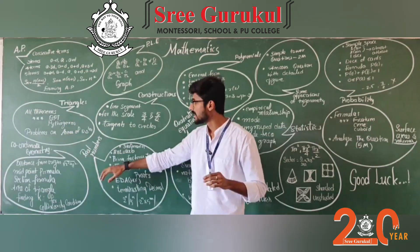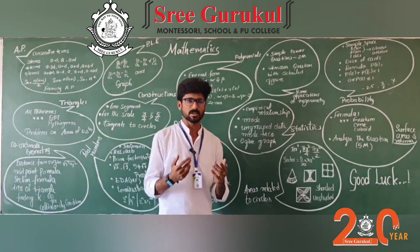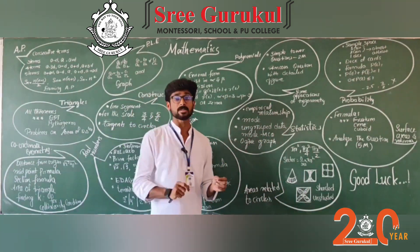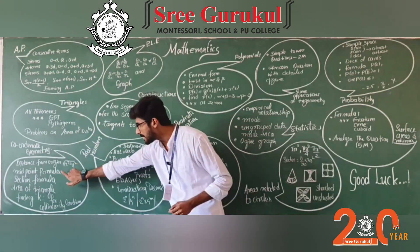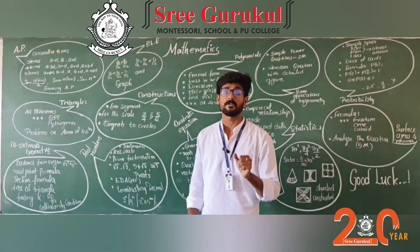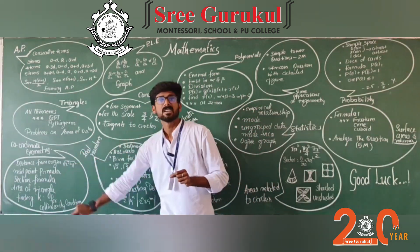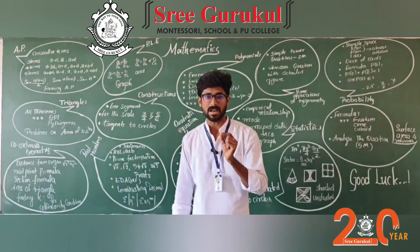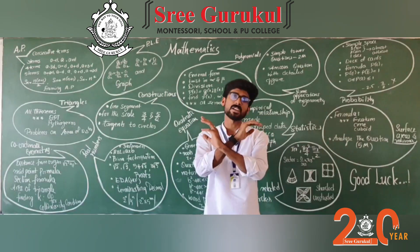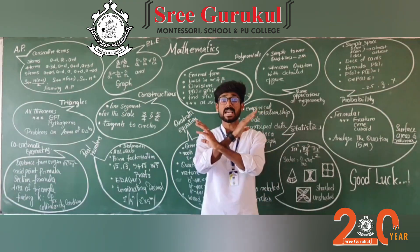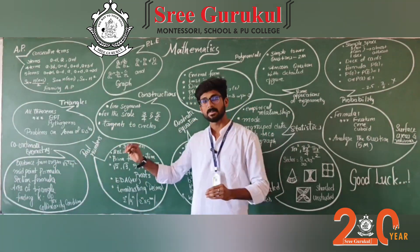Let us move on to Coordinate Geometry. The distance formula is familiar to all, but distance of a point from the origin — root of (x² + y²) — may be expected for MCQs. Be aware of when the midpoint formula is used: when the ratio is 1:1, equally divided. For example, the point of intersection of the two diagonals in a parallelogram uses midpoint formula. The section formula divides in a ratio other than 1:1, so take clarity on that.